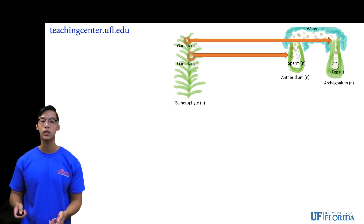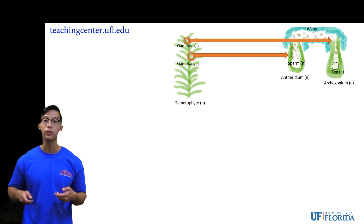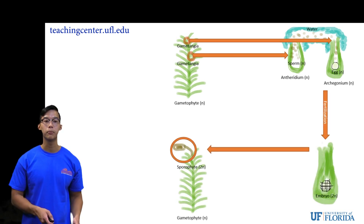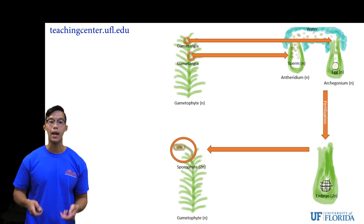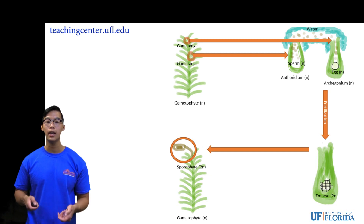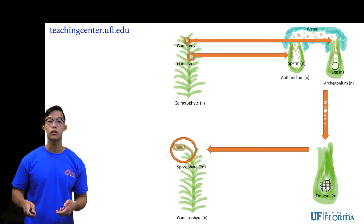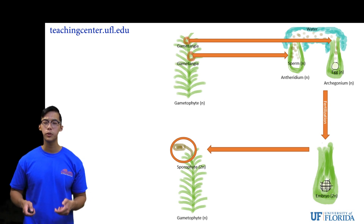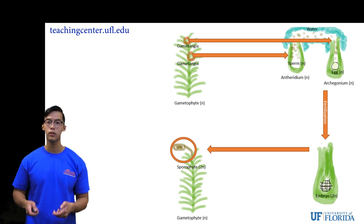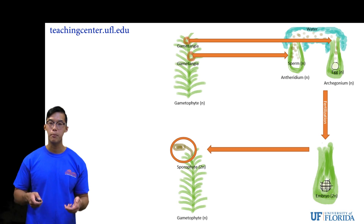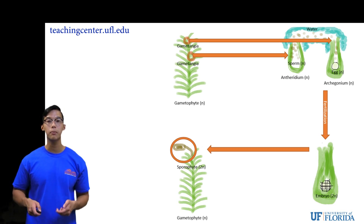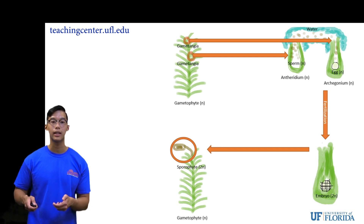Next, the joining of the egg and the sperm — fertilization — forms the embryo with a ploidy of 2n. The embryo develops into the 2n sporophyte, which houses the sporangium. For the 2n embryo to develop into the 2n sporophyte, mitosis must have occurred, since mitosis maintains a cell's ploidy.